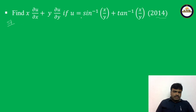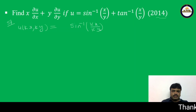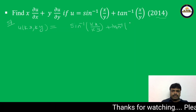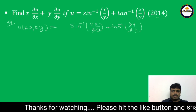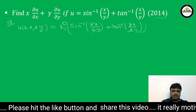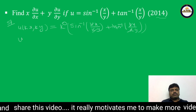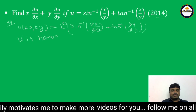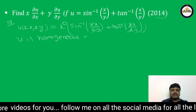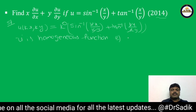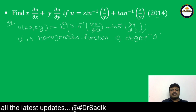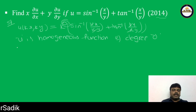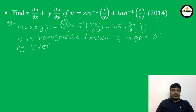Here we write u(kx, ky) directly. That is equal to sin inverse(kx/ky) + tan inverse(kx/ky). The k's cancel in both terms. So this equals k⁰ times [sin inverse(x/y) + tan inverse(x/y)]. Therefore u is a homogeneous function of degree 0. By Euler's theorem with n = 0: x·∂u/∂x + y·∂u/∂y = 0·u = 0.